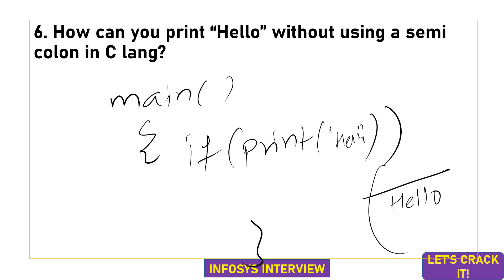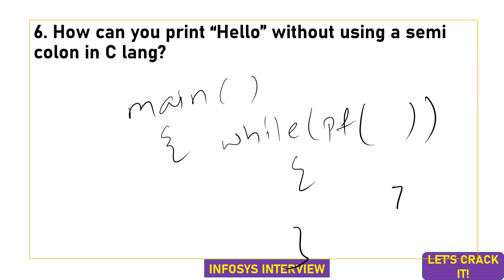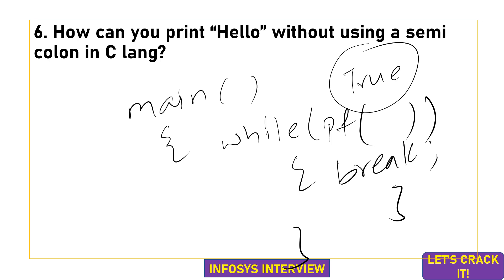Another way is to use a looping statement. Inside the main block, use a while loop and place the print statement within it, leaving the while block's condition empty. Printing something always returns true, so the while loop would go infinite. You can insert a break within the loop so that it prints only once. Without the break, it will keep printing and go into an infinite loop.